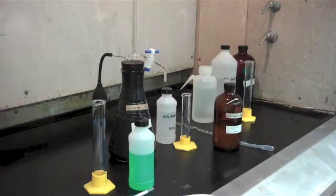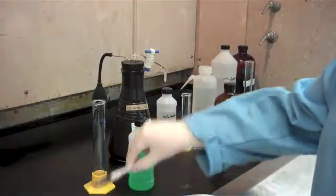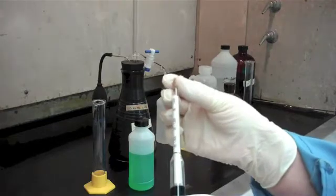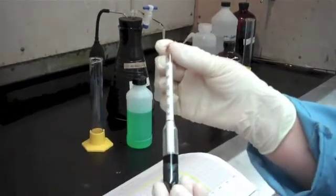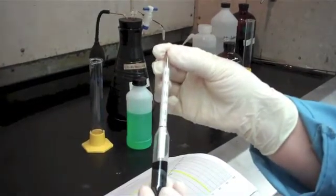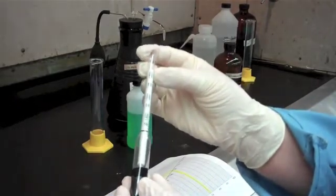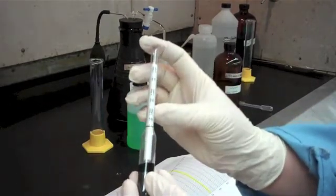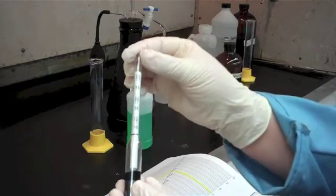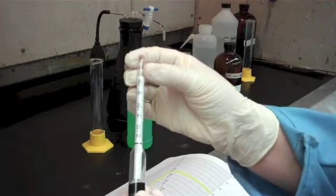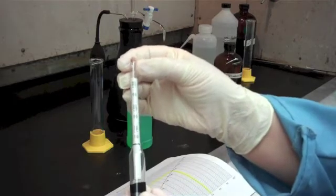For the specific gravity method, we will need to use a hydrometer. You can purchase these at any laboratory supply company, such as Fisher Scientific or VWR. They come in many different ranges. For this particular test, we will be using the range of 1.200 to 1.400 grams per milliliter. Each line represents 0.005 grams per milliliter.